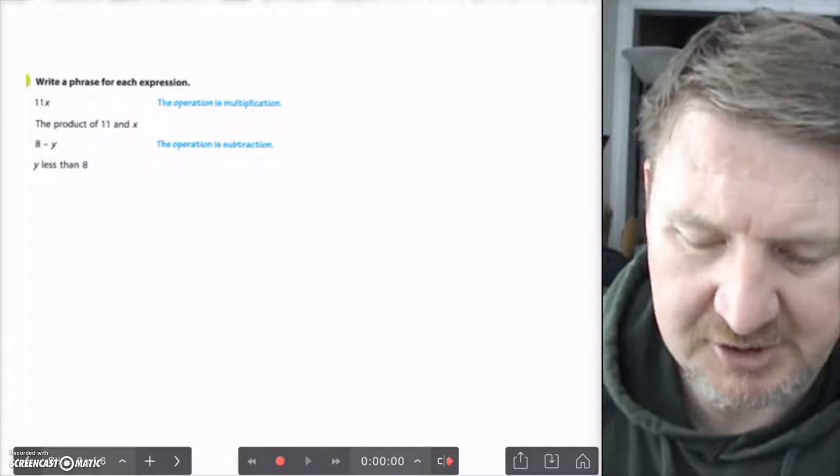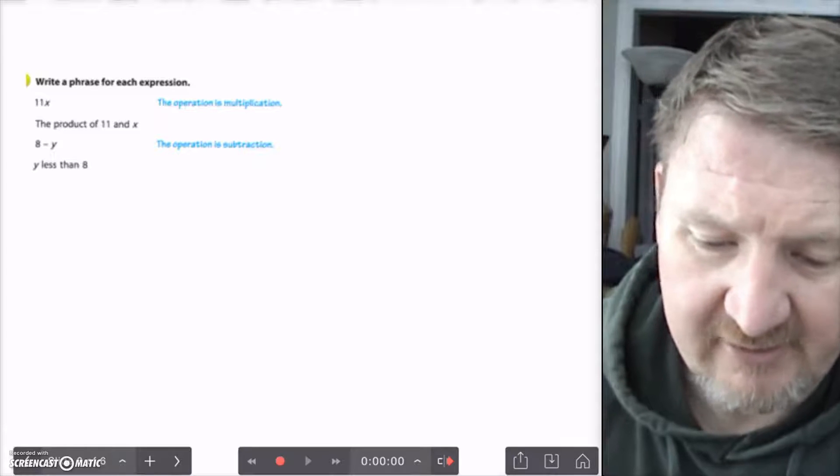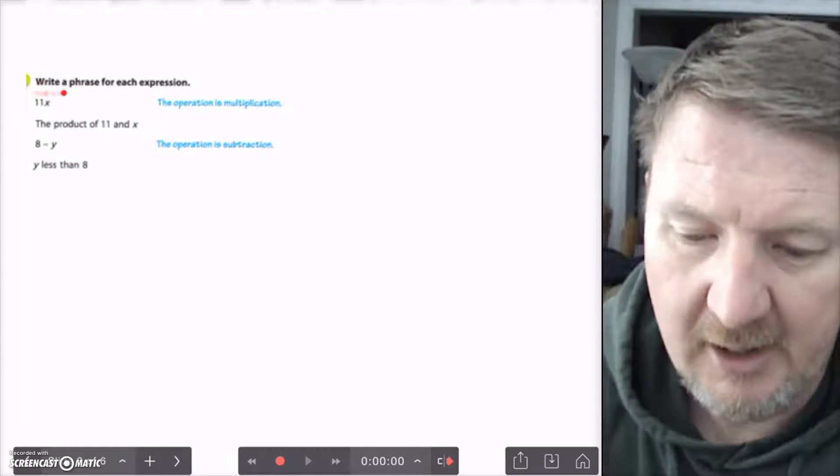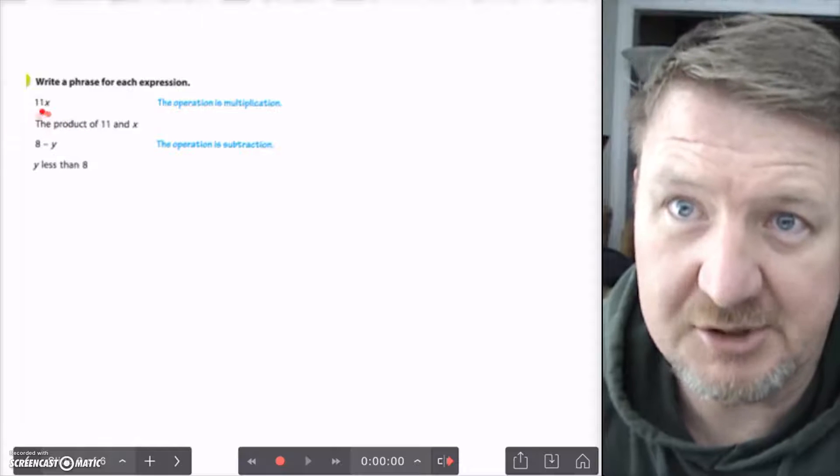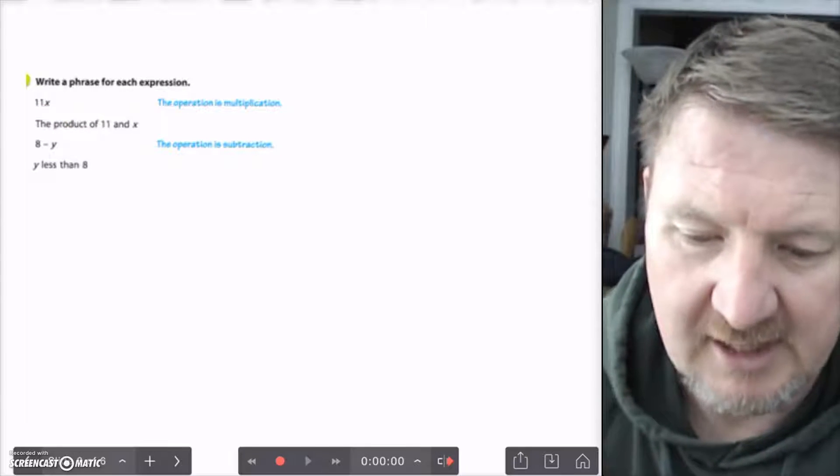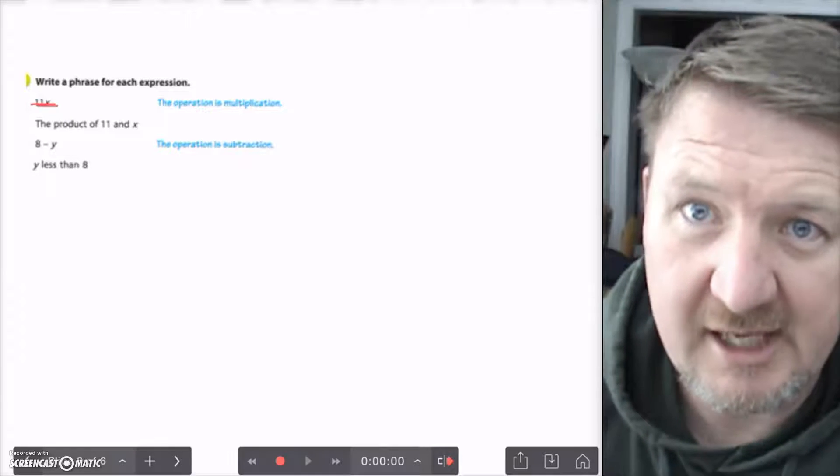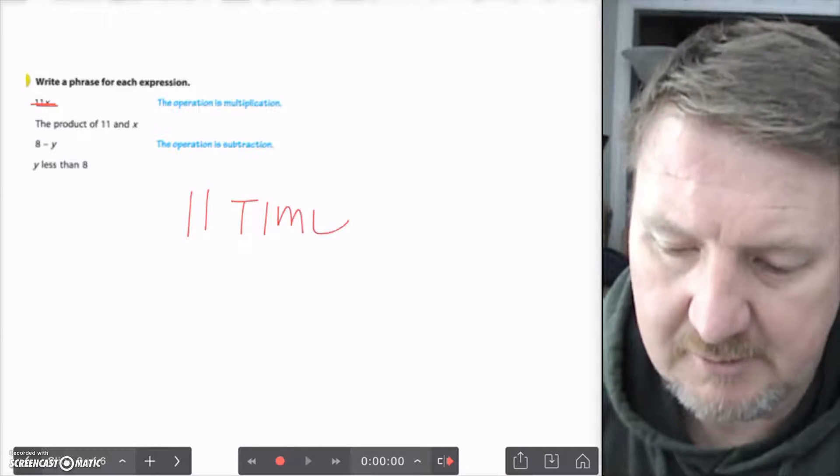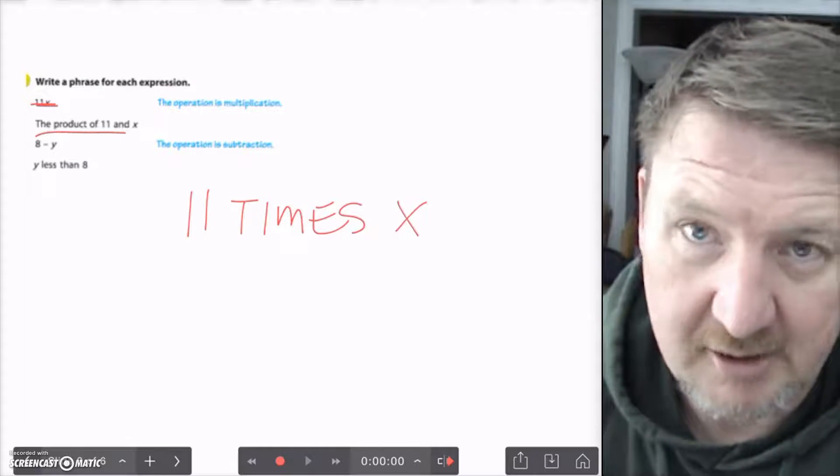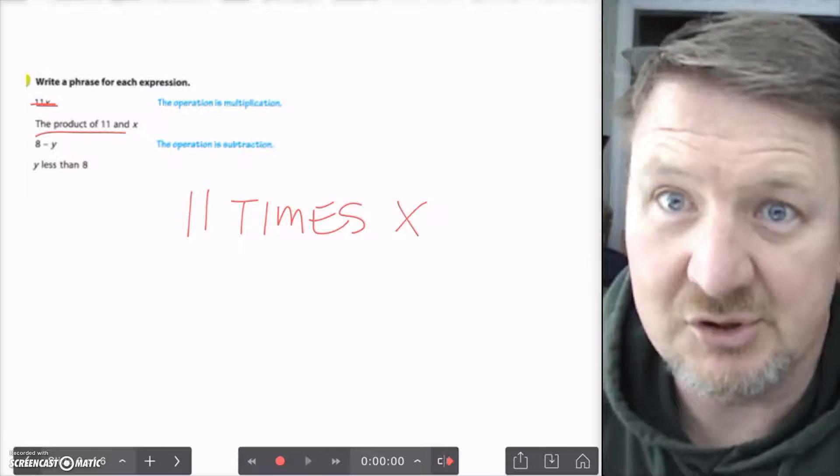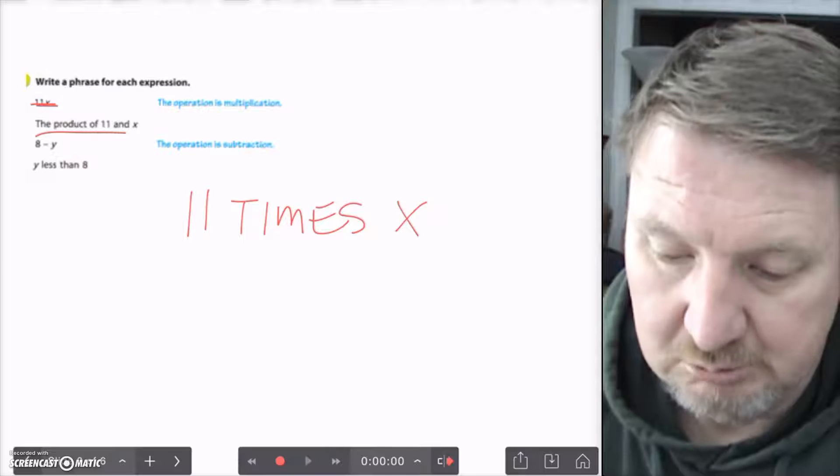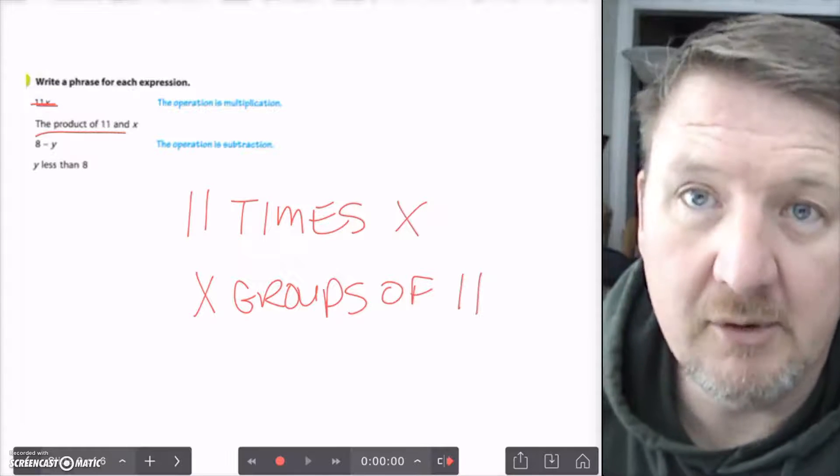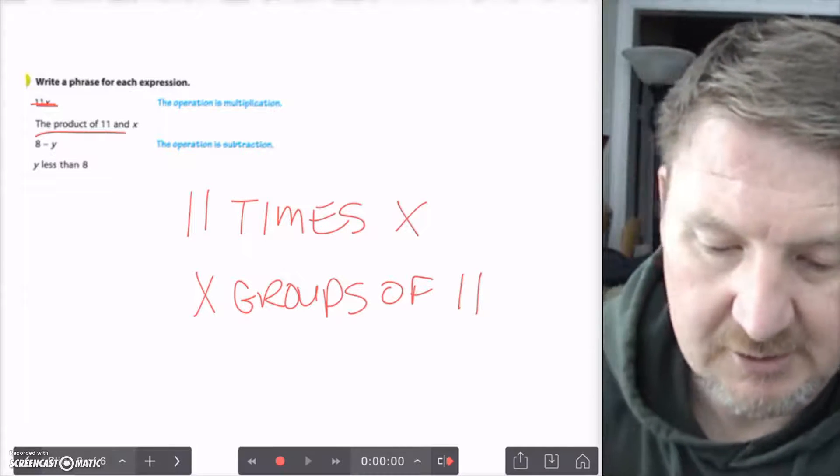Now, this one says write a phrase for each expression. So, now we're taking the expression and turning it into words. 11x means - I already told you in the slide before - it means multiplication. So, you can say 11 times x. Here, it says the product of 11 and x. That means you're multiplying. You can say x groups of 11, some unknown number of groups of 11. So, those are a couple ways you can do it.